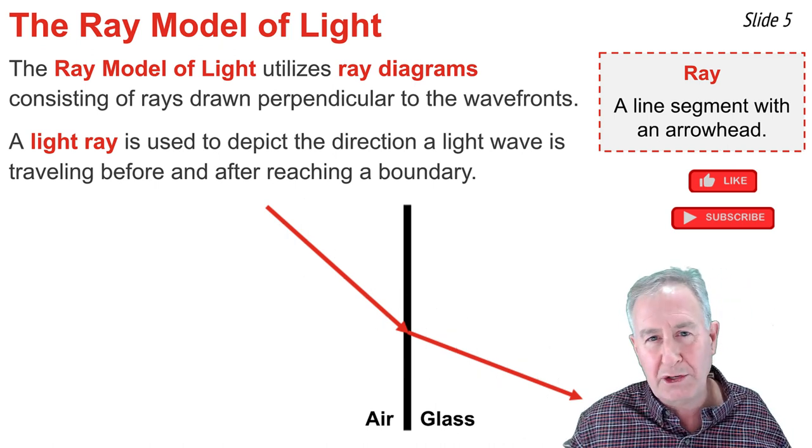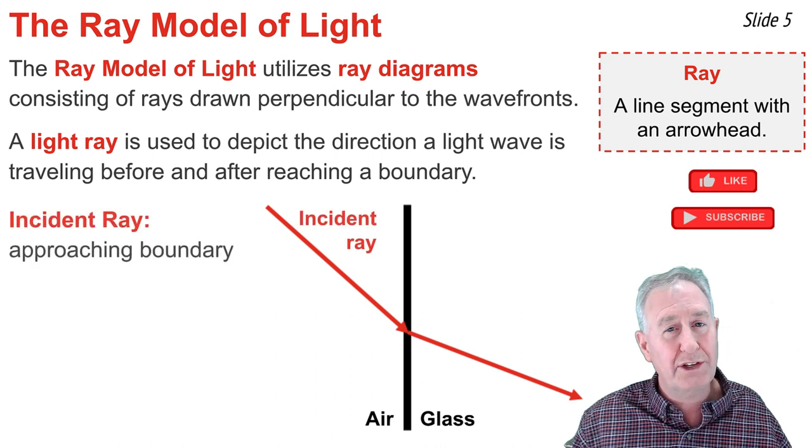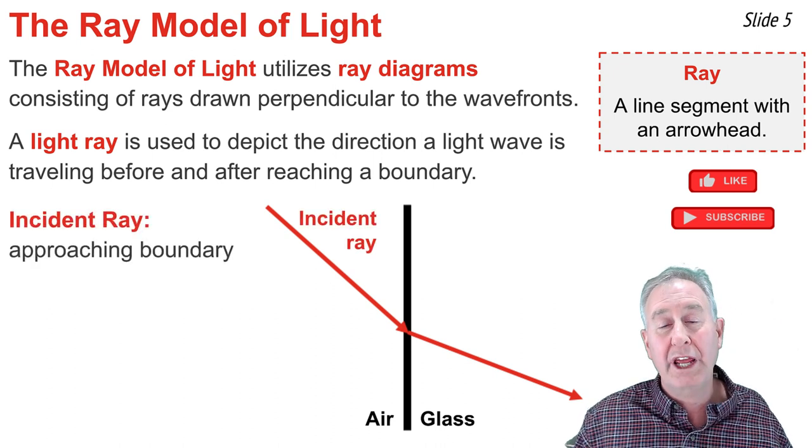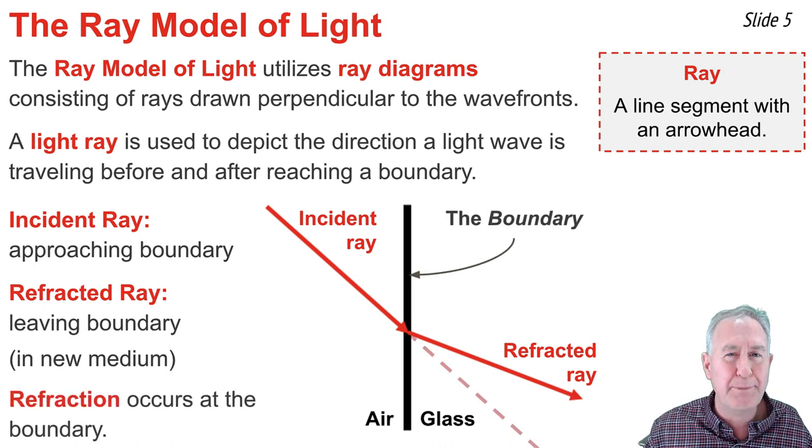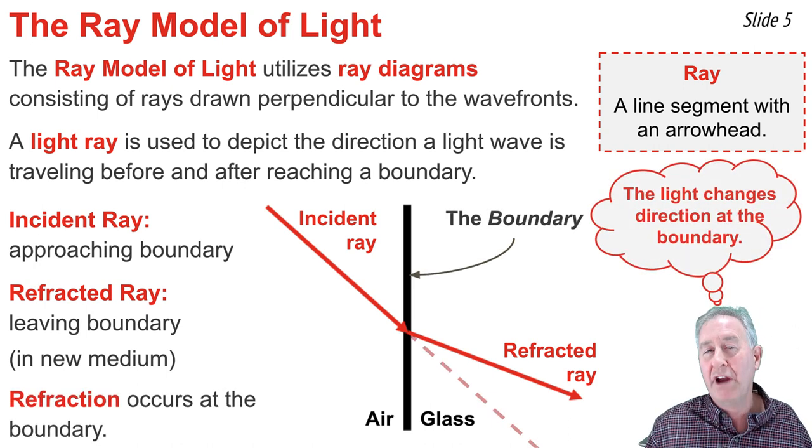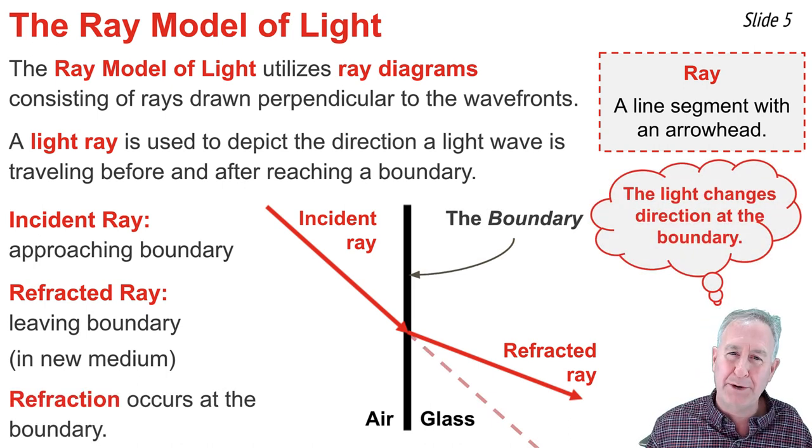In this situation, the ray in the air is known as the incident ray. And the ray in the new material, the glass, is known as the refracted ray. And we notice that the incident ray and the refracted ray are not lined up with one another. There's some refraction taking place at the boundary.